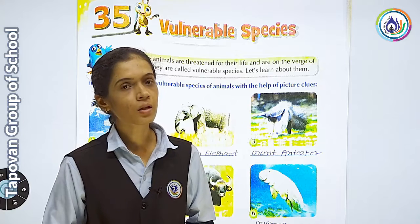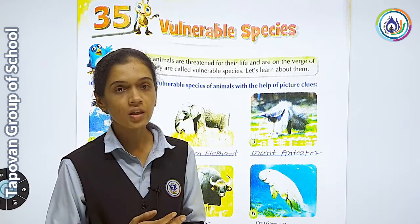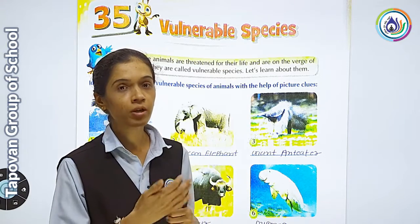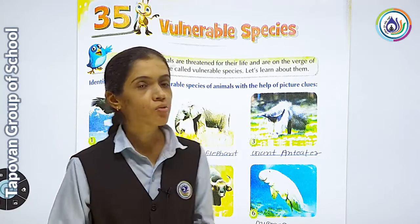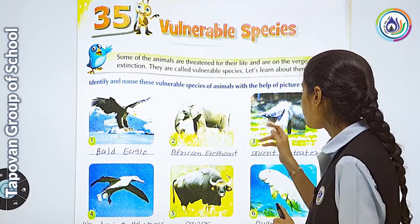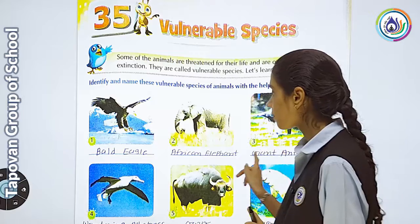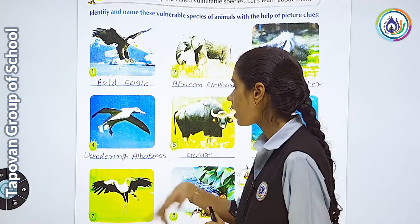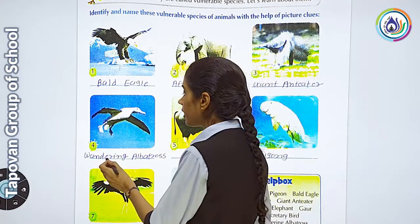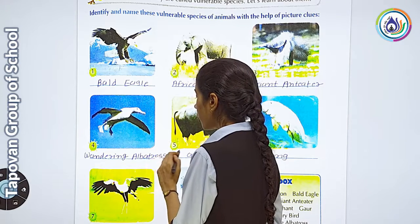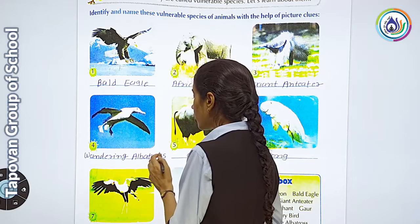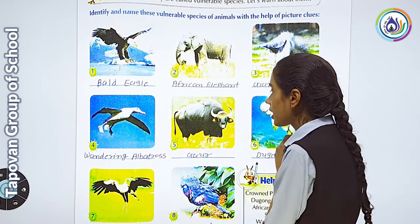So from the pictures you can see the animals. The first picture you can name Bald Eagle, the second picture African Elephant, the third picture Giant Anteater. Next, the fourth bird is Wandering Albatross. Spelling: W-A-N-D-E-R-I-N-G A-L-B-A-T-R-O-S-S — Wandering Albatross.